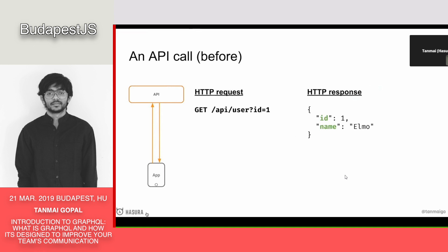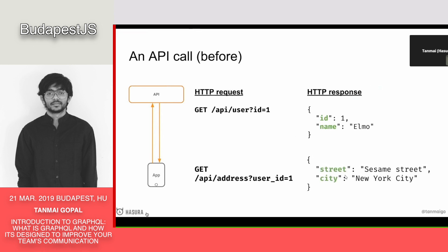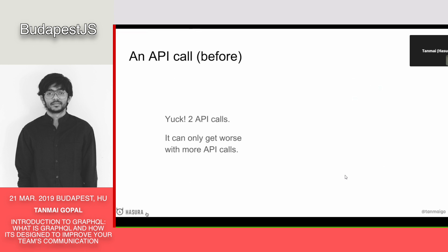Now imagine we have to modify the UI — we want to update the mobile or web app and add address information. On the profile page we want to show not just your name but also your most recent address. So we make another API call to GET /api/address?userId=1, and we get that JSON back, which we then render on the front end. This is problematic because we now have to make two API calls instead of one.